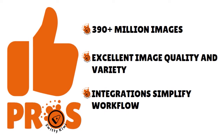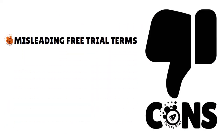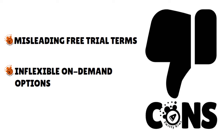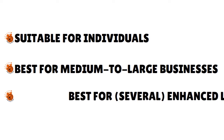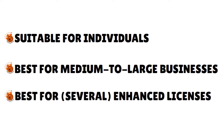In terms of cons, they have a misleading free trial program and they are inflexible when it comes to on-demand options, because packs are sold separately for every type of content. Shutterstock is really for individuals, but it's also great for medium to large businesses, and is best for enhanced licenses — you get 350 to 750 images per month.